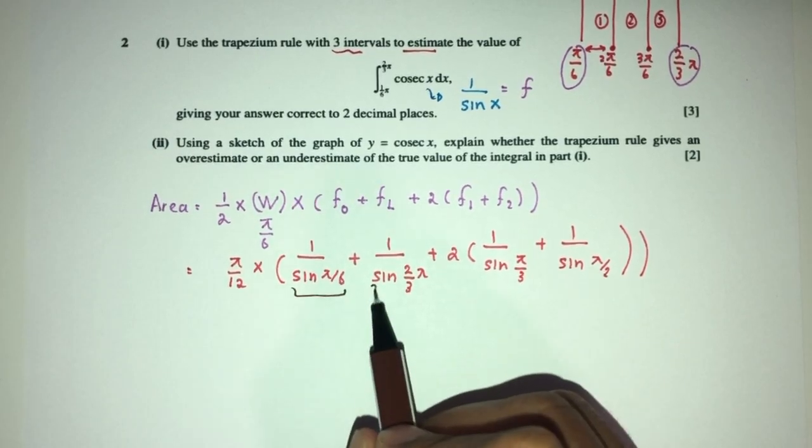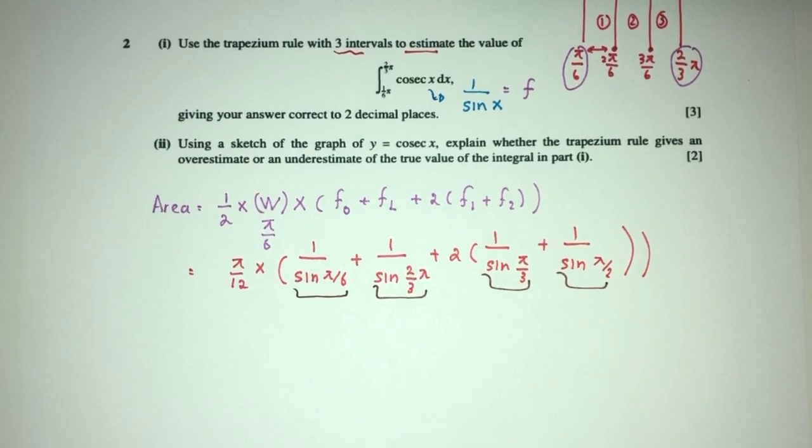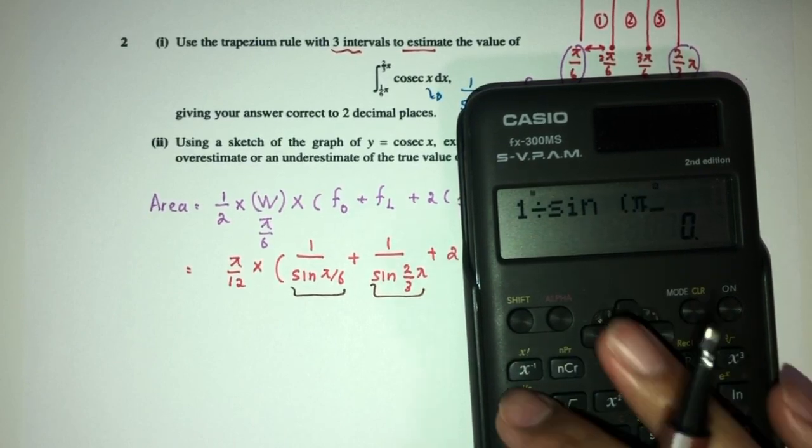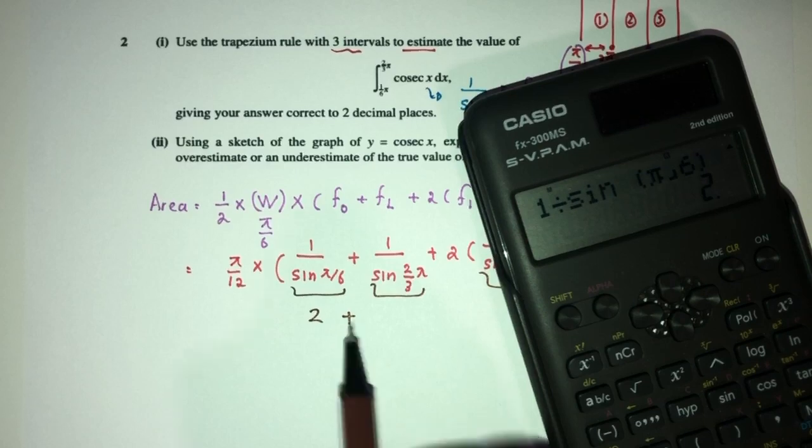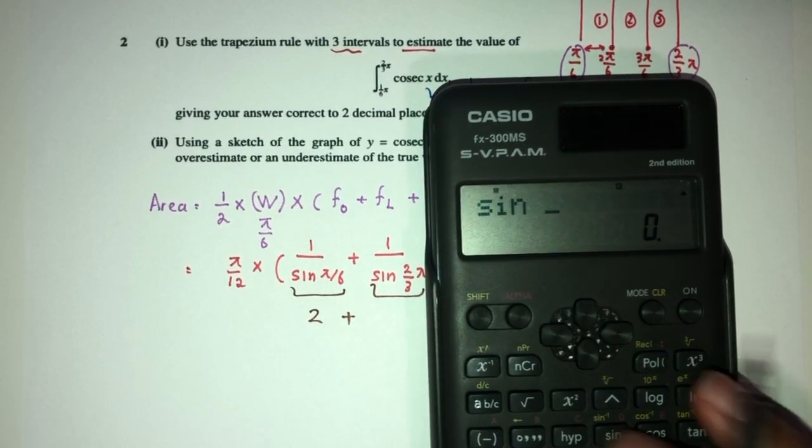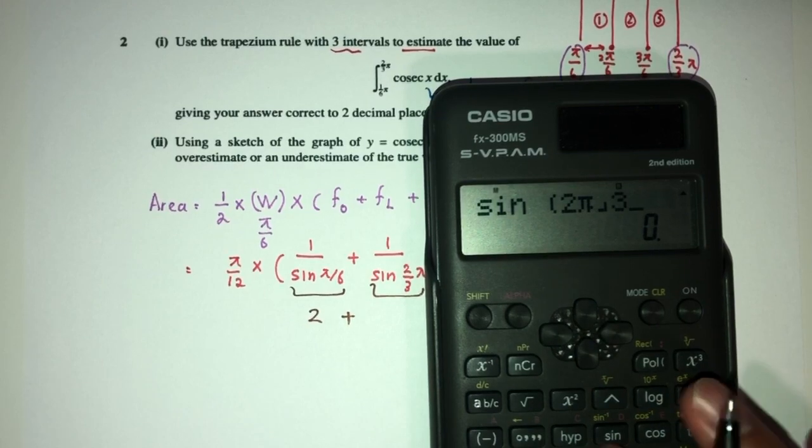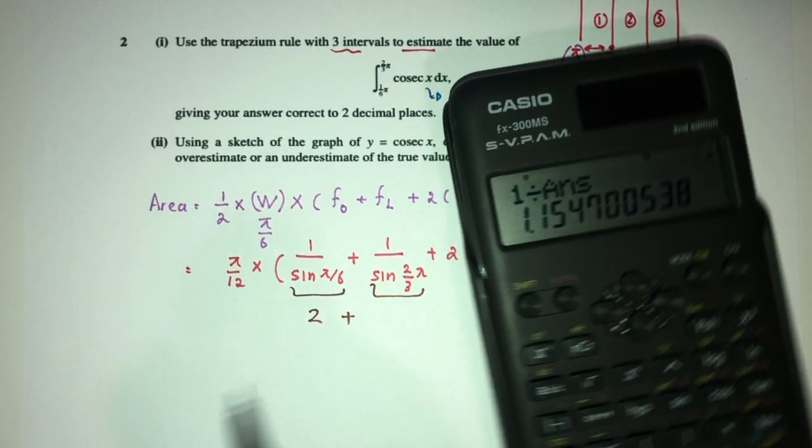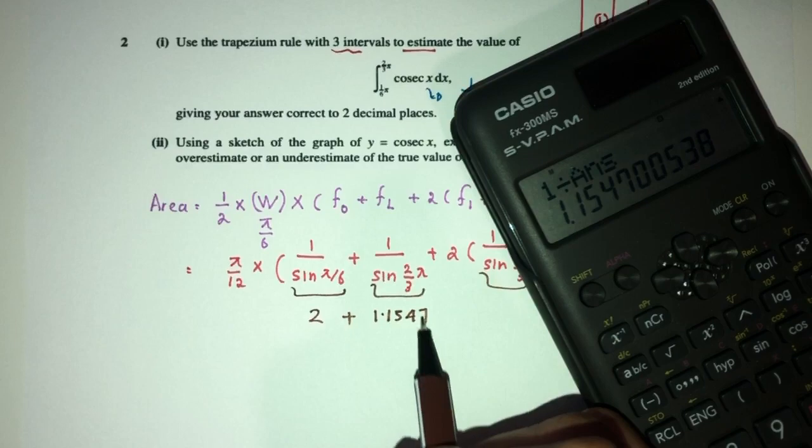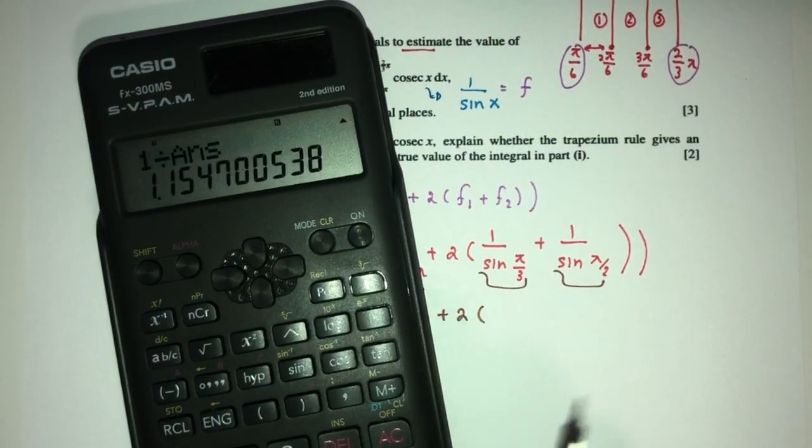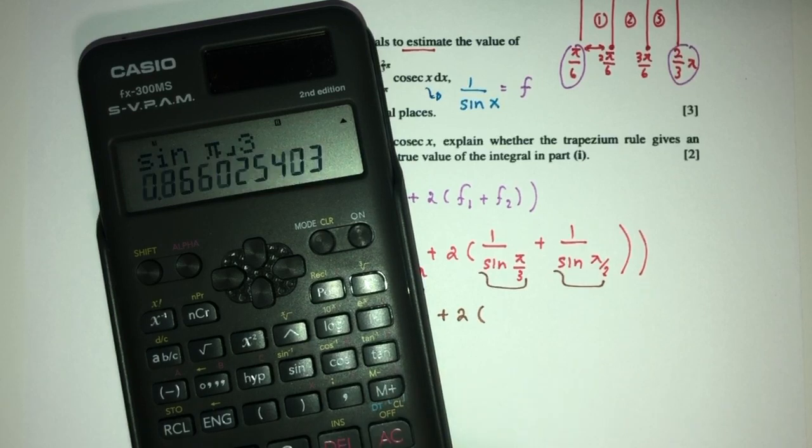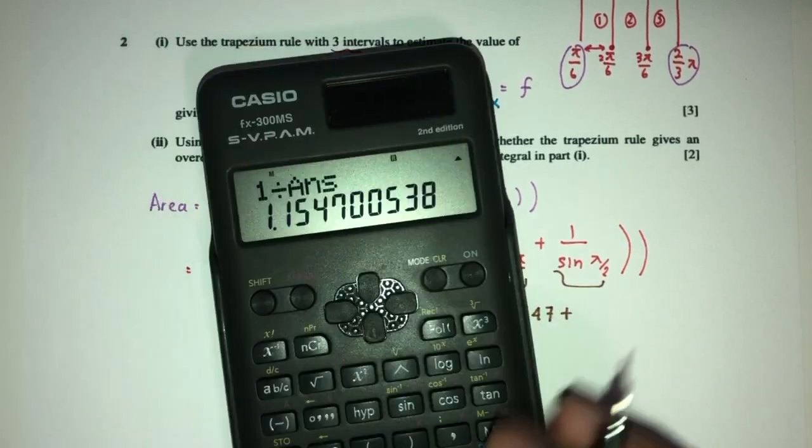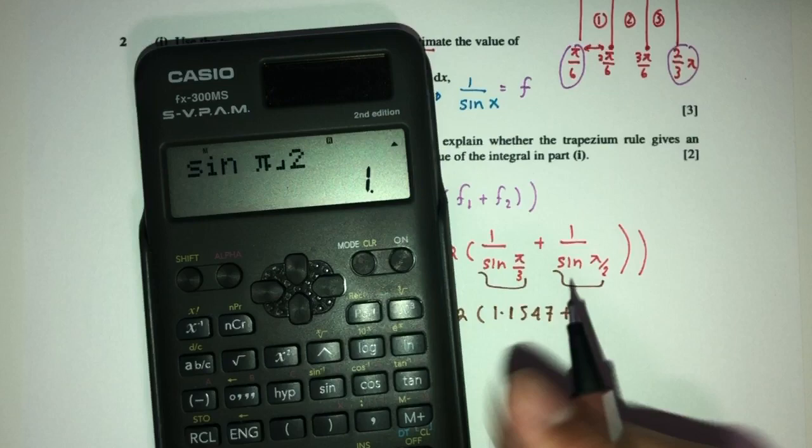Multiply by f(0): 1/sin(π/6) plus 1/sin(2π/3) plus 2 times 1/sin(π/2). Now let's simplify these values one by one. First we have 1 divided by sin(π/6). Then sin(2π/3). And here we have sin(π/2), that should be just 1.